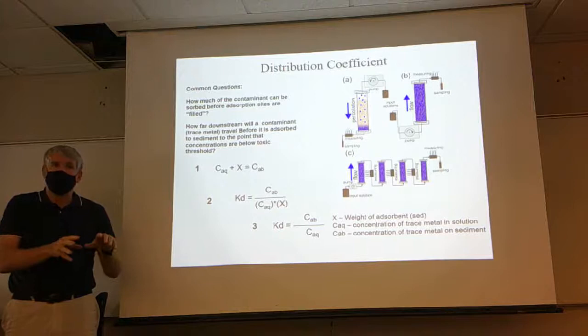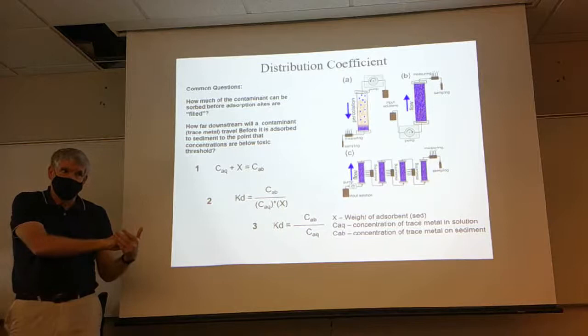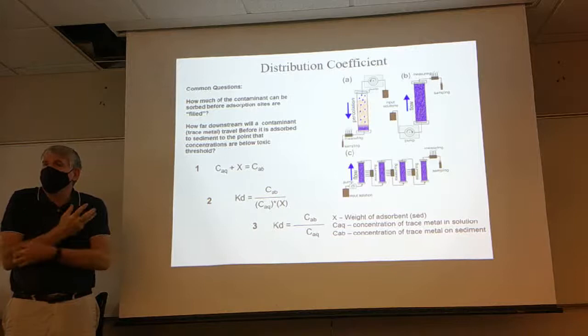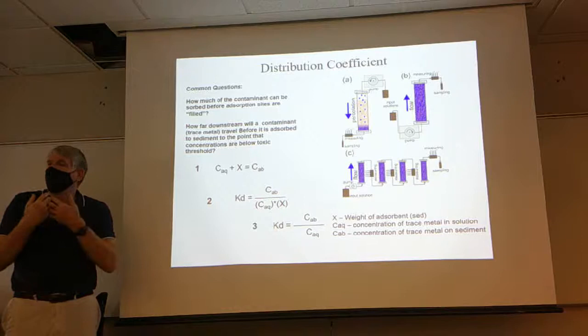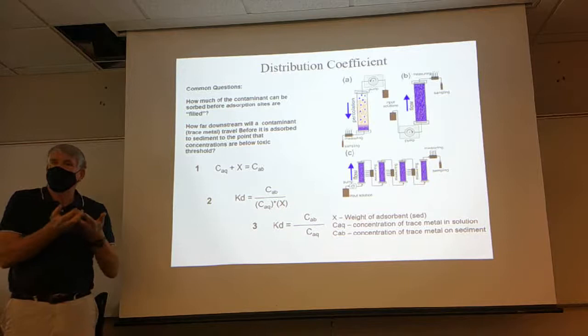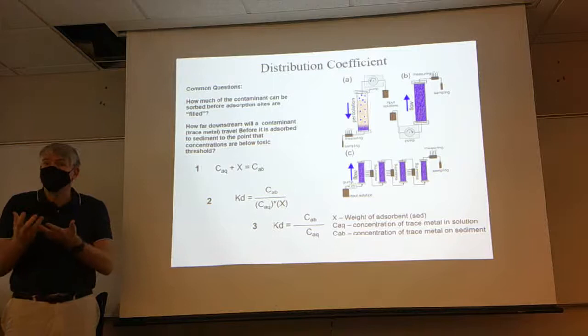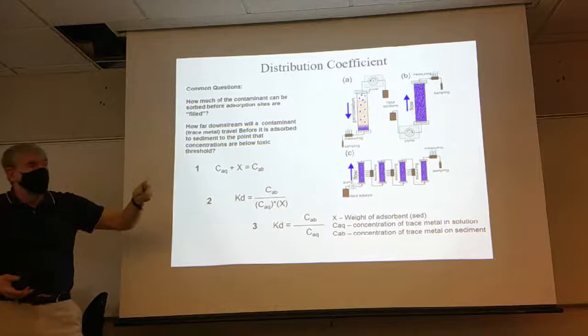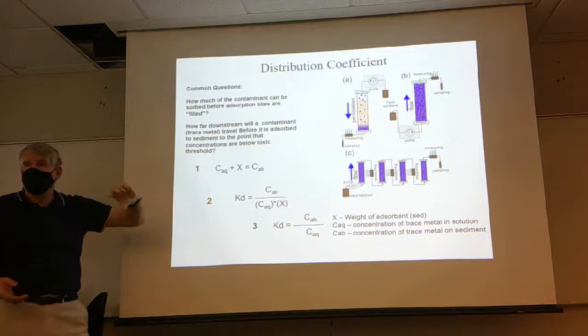The other question is: if we stick a contaminant in a river or groundwater and it flows away from it, how far can it move before all of it is adsorbed to the sediments? So it's no longer in the water, or at least concentrations have decreased so much that it's below toxic levels. As the contaminant moves downstream, some of it is going to be adsorbed to the sediments — we want to answer how much will be adsorbed versus remain in the water column.